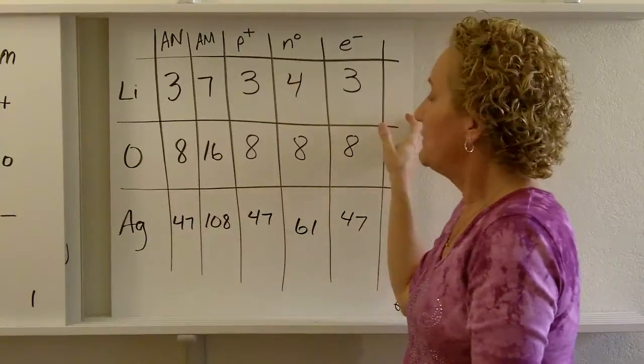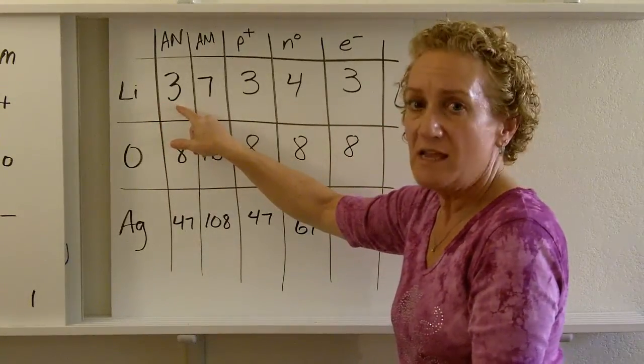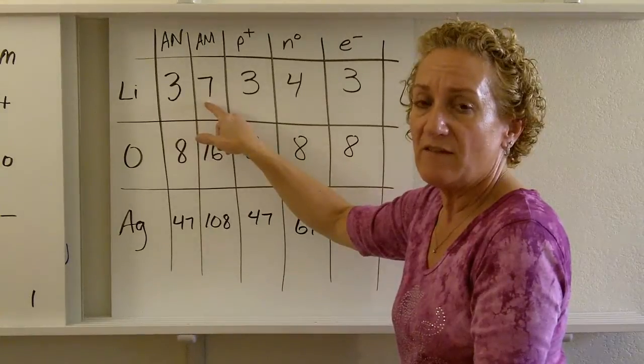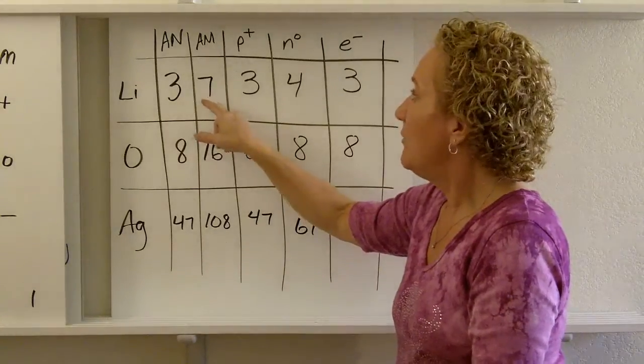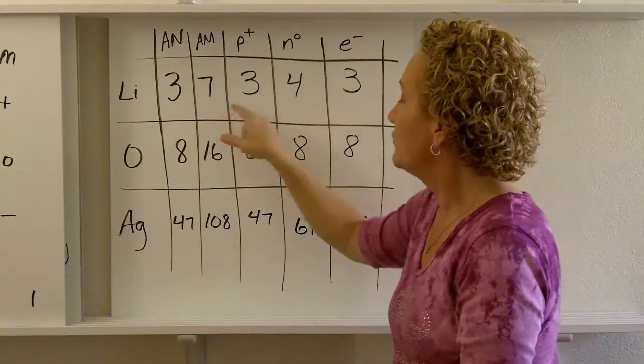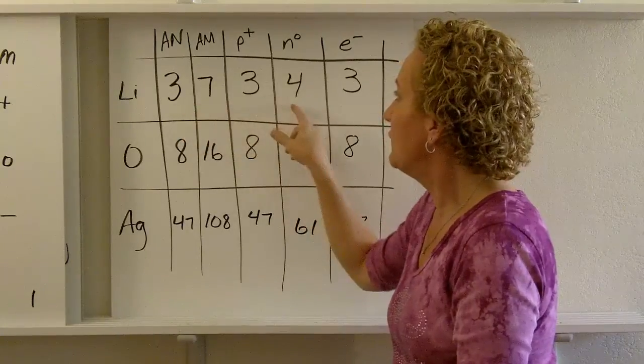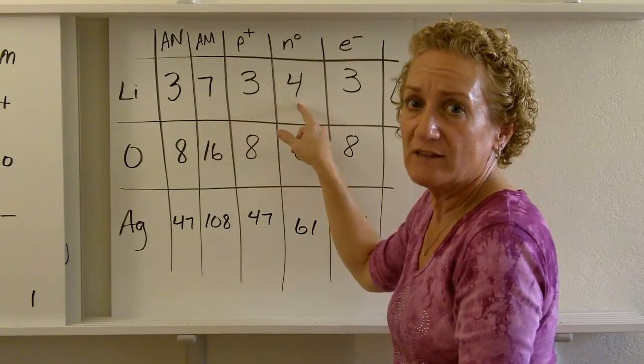So let's do some examples. Lithium. Lithium has an atomic number of 3 and an atomic mass of 7. That 3 tells me there's 3 protons and 3 electrons, so I can fill that in right away. How many neutrons do I have? 7 minus 3 is 4, so I have 4 neutrons.